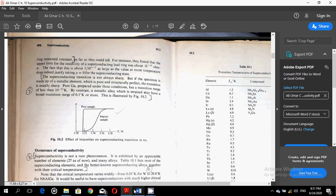The fact that this is about 1 over 10 to the power plus 17 as large as the value at room temperature does indeed justify taking rho almost equal to zero for the superconducting state. The superconducting transition is not always sharp.